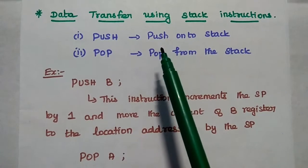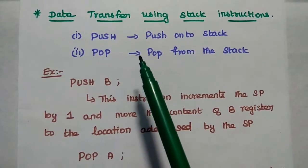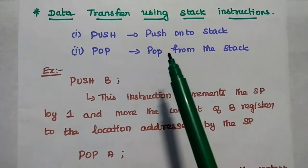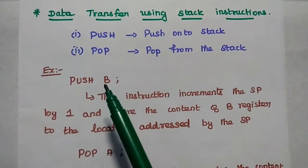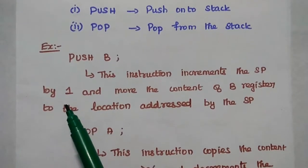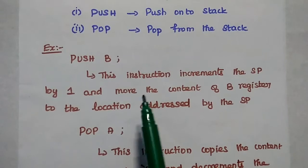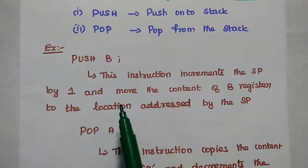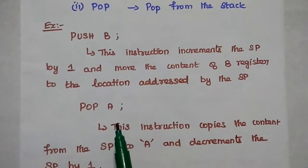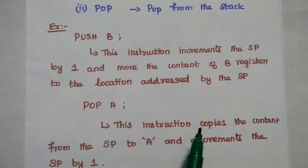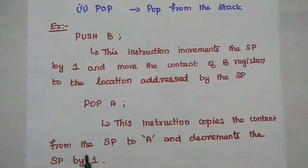Next are data transfer instructions for stack operations. Two important instructions are used: PUSH and POP. PUSH instruction transfers data into the stack — for example, PUSH B increments the stack pointer by one and moves the content of the B register into the location addressed by the stack pointer. POP A copies the content at the current stack pointer into this accumulator and decrements that location by one.